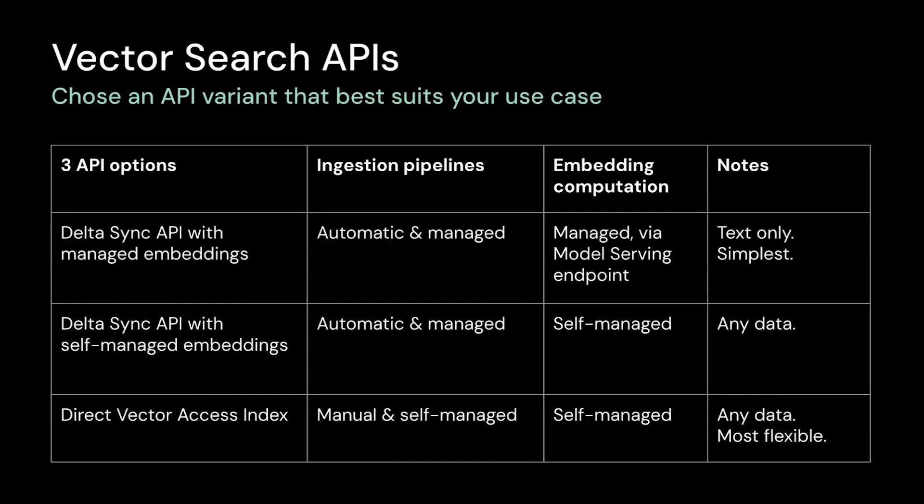Here I'll discuss more on the three different APIs we offer for vector search. First, Delta Sync API with managed embeddings — this is the most performant and scalable solution. It supports incremental refresh and sync with automatic tuning. If you have your own embeddings, you can go with the second option, Delta Sync API with self-managed embeddings. You provide a source Delta table that contains pre-calculated embeddings. As the Delta table is updated, the index stays synced with the Delta table. Third is the Direct Vector Access index — a completely DIY option. You must manually update the index using the REST API when the embeddings table changes. You can opt for the direct vector index, but be aware that there is additional overhead compared to Delta Sync.